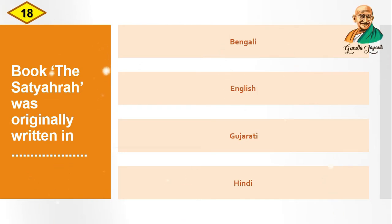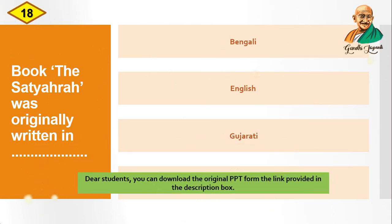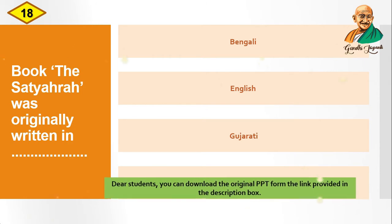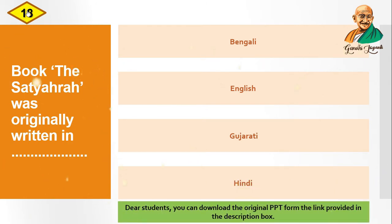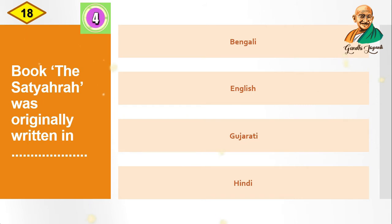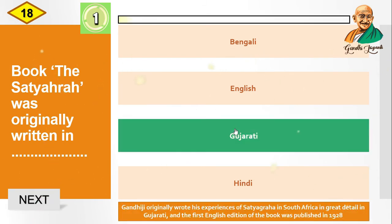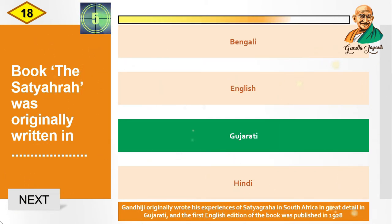Question: The book "The Satyagraha" was originally written in — options are: Bengali, English, Gujarati, Hindi. The correct answer is Gujarati. Gandhiji originally wrote his experience of Satyagraha in South Africa in great detail in Gujarati.